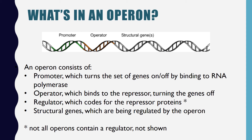The next part is the operator. This is where the repressor protein, which acts as an off switch, binds. If the operator is bound to a repressor, RNA polymerase will be unable to bind to the promoter sequence and the genes will not be transcribed. In this state, the operon is considered to be off. However, if no repressor is bound to the operator, then RNA polymerase can bind to the promoter and the genes will be transcribed. In this state, the operon is said to be on.